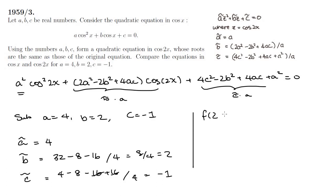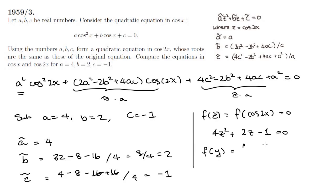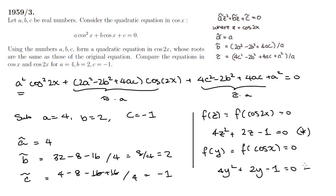The function in terms of z, which is cos 2x, is 4z squared plus 2z minus 1 equals 0. And the function in terms of y, where y is cos x, is 4y squared plus 2y minus 1 equals 0. That is our target equation and our original equation.